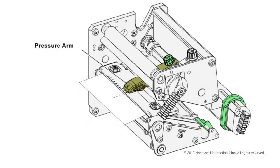The pressure arm is used to apply downward force to the printhead so that it contacts the media evenly across the width of the printhead.